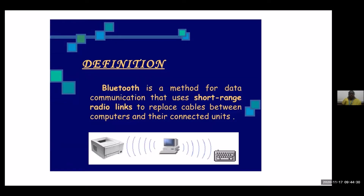The Bluetooth SIG oversees development of the specification, manages the qualification program, and protects the trademarks. A manufacturer must meet Bluetooth SIG standards to market a device as Bluetooth. As of 2009, Bluetooth integrated circuit chips shipped approximately 920 million units annually. Bluetooth is defined as a method for data communication using short-range ultra high frequency radio waves to replace cables between computers and connected units.